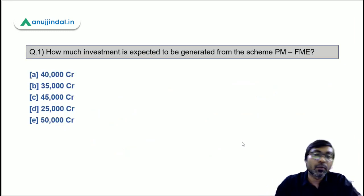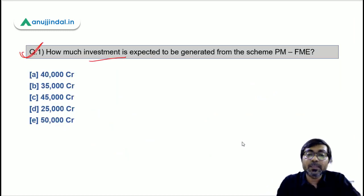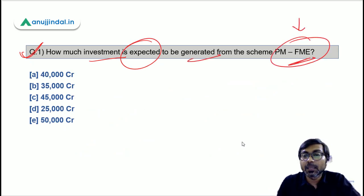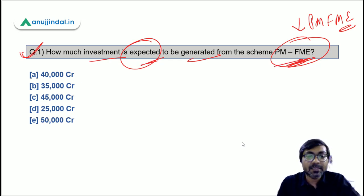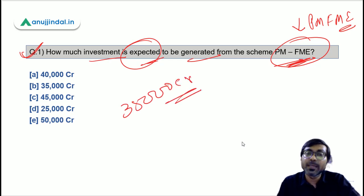Now let's go through practice questions. Question 1: How much investment is expected to be generated from the PMFME scheme? We discussed that ₹35,000 crore is the expected investment to be generated under this scheme. Option B — ₹35,000 crore — is the correct answer.